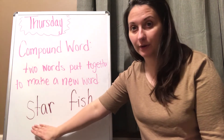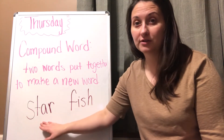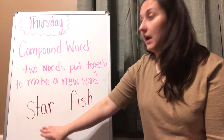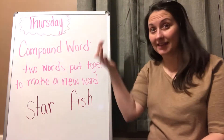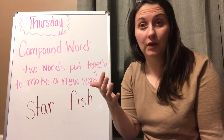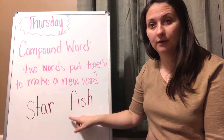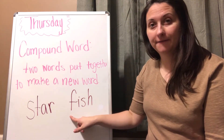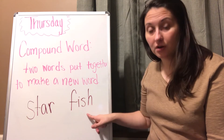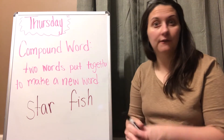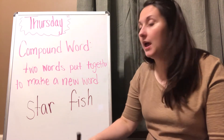So let's look at this word. This word is — S-T-A-R — star. We know that a star is in the sky and we see them at night, so we know that star is a word on its own. And then let's look at this word: F-I-S-H — fish. We know that a fish lives in water, so fish is a word on its own.